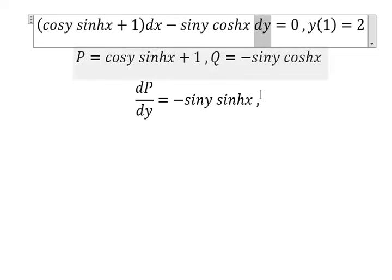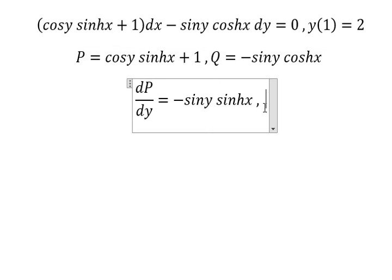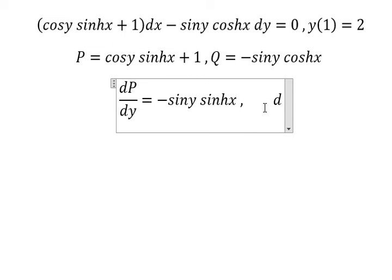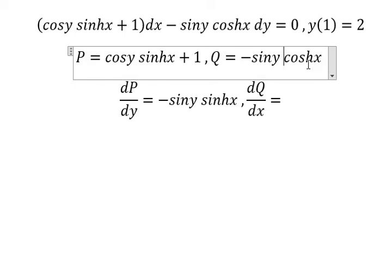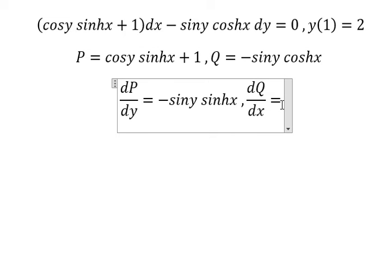We have dy, that means we need to do first the derivative of Q with respect to x. So first the derivative of coshx we have sinhx.